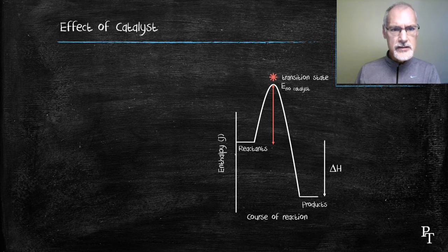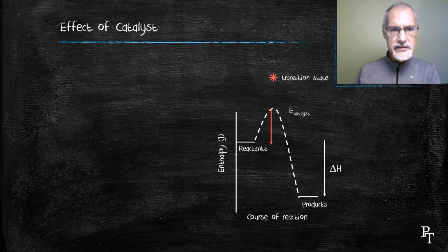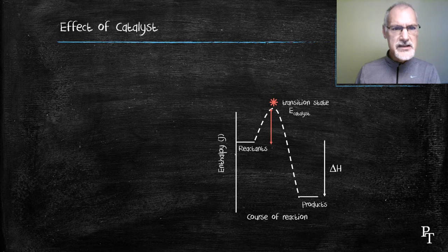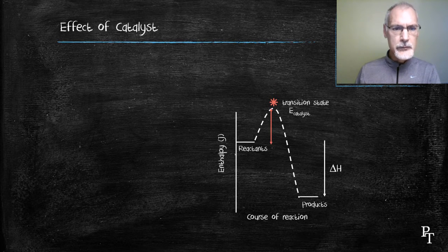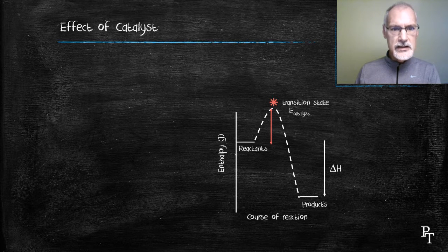The introduction of a catalyst reduces the activation energy, forming a different transition state, often involving a complex that includes both the catalyst and the reactants. That reduction in activation energy makes it easier for my molecules to react.